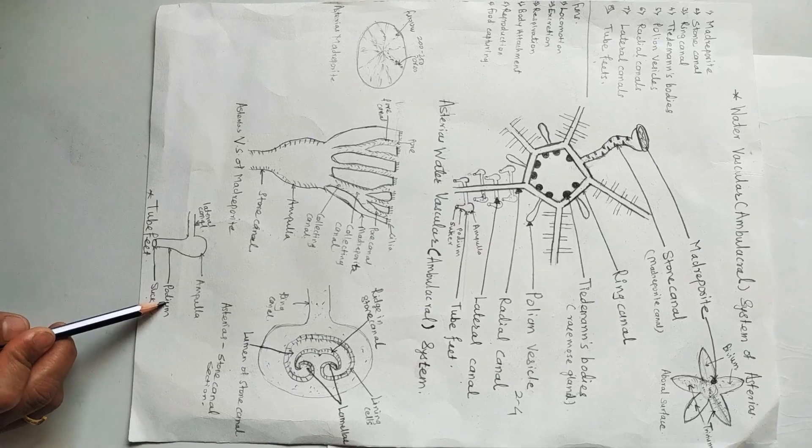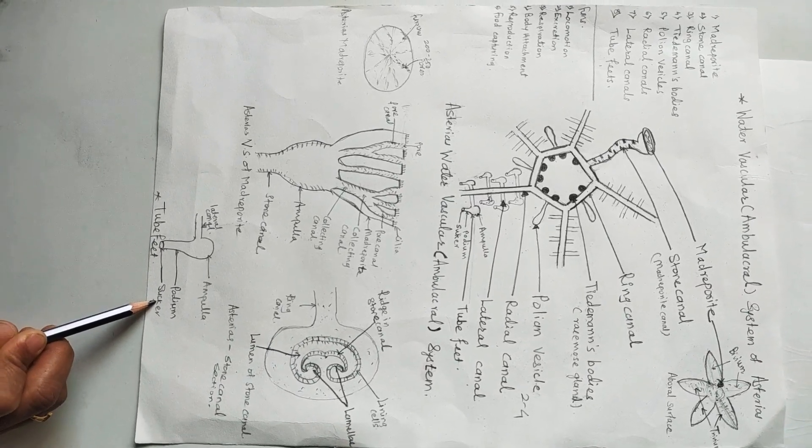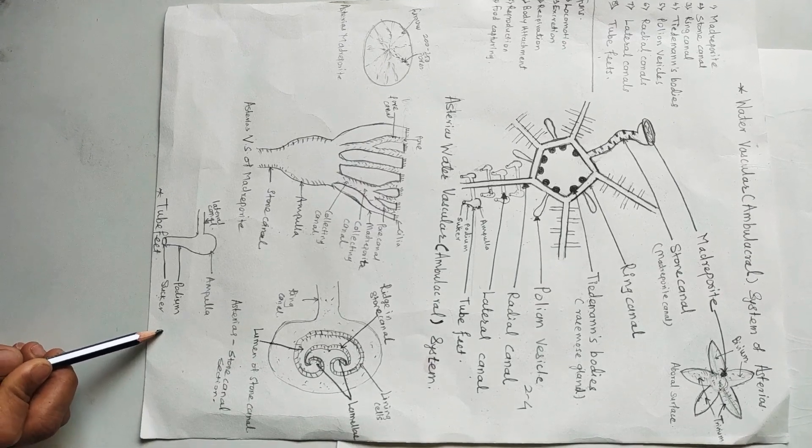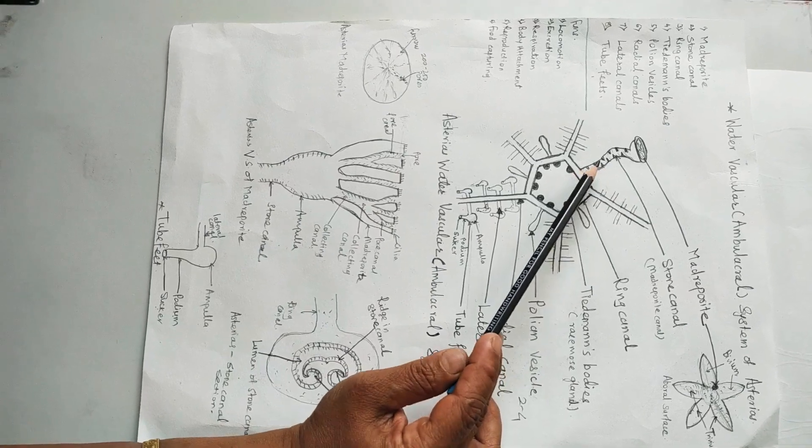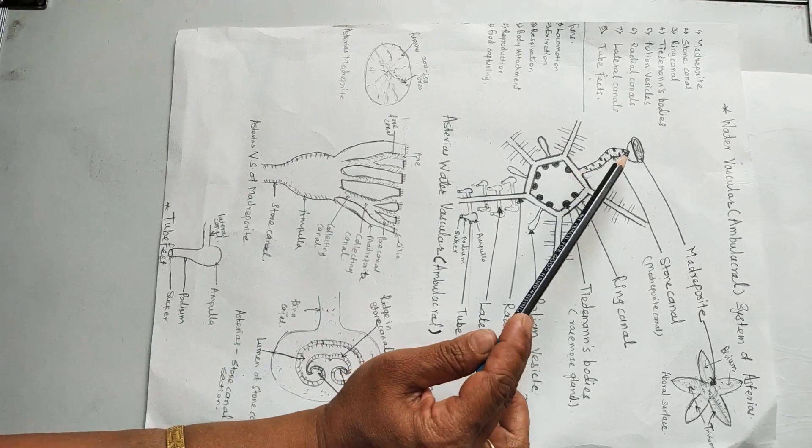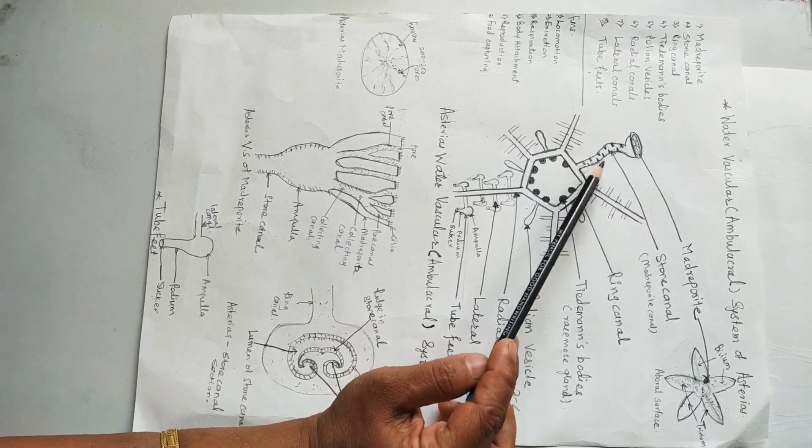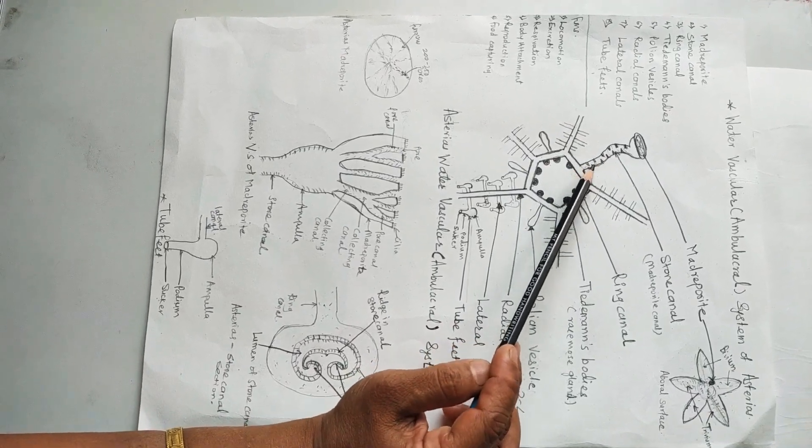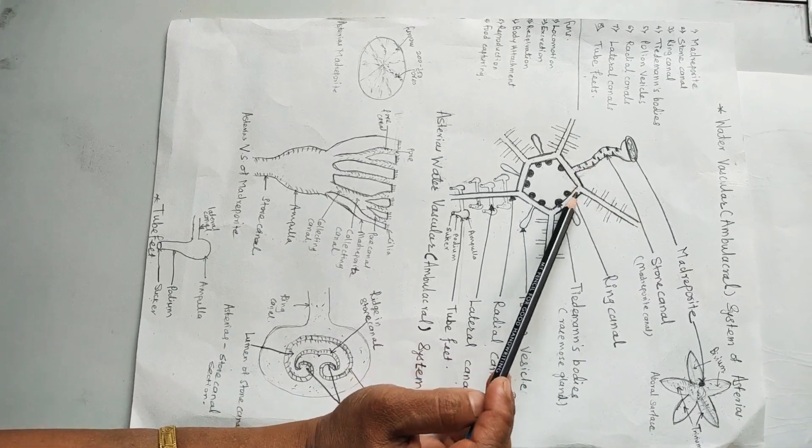Tube feet are used for locomotion and respiration in Asterias. All the water vascular system is lined with ciliated or flagellated cells. They produce the water current and are helpful for sending water or flowing water from that part to the next part.